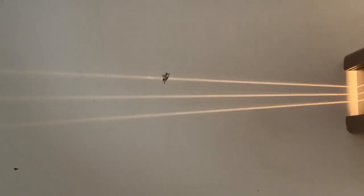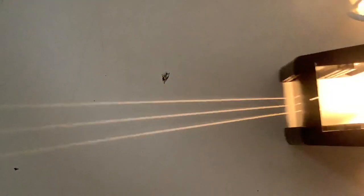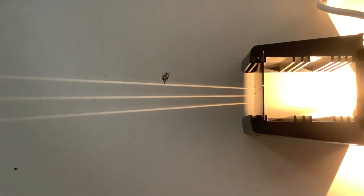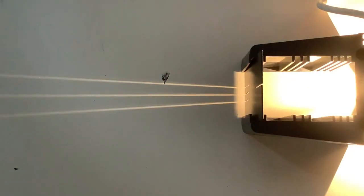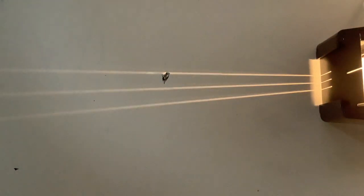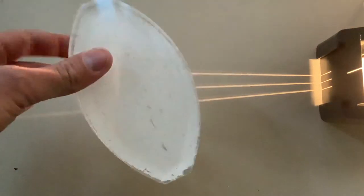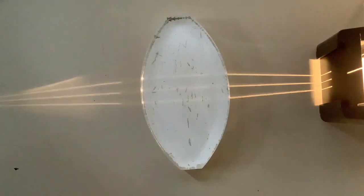So the action of a converging lens. I've got a ray box here and I've used the slit which has three slits in it to produce three rays of light. I've got a perspex block shaped like this, and if I put that in there